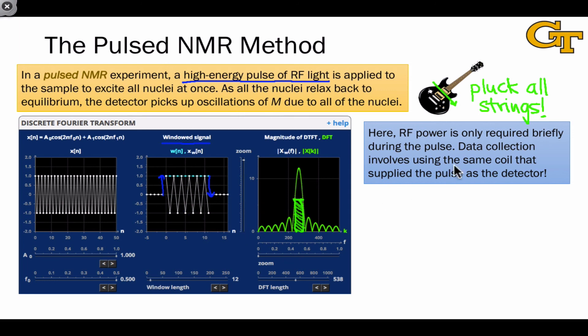And, thanks to the geometry of the situation, which we won't get into in detail, but I'll just state, data collection is easy because the same radio frequency coil that supplied the pulse of radio frequency light can be used as the detector, with the current running in the opposite direction now, as it feels the magnetic field given off by the nuclei instead of supplying a magnetic field to the nuclei.